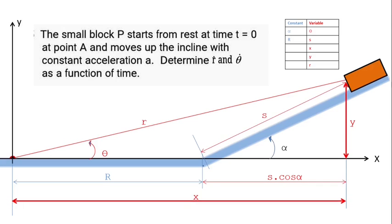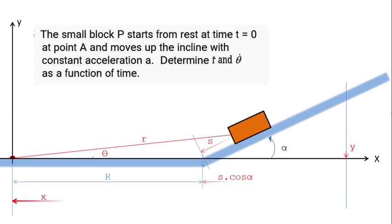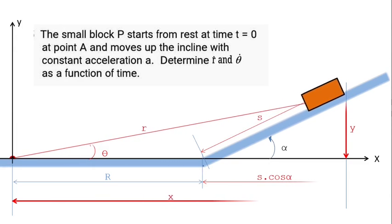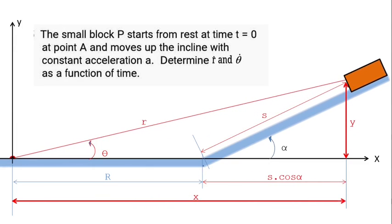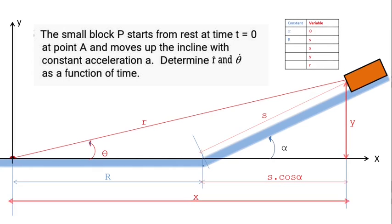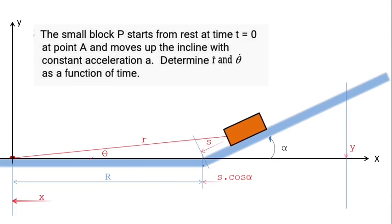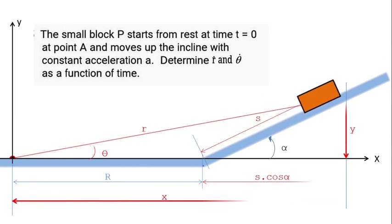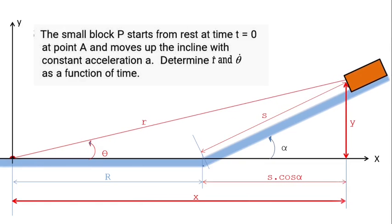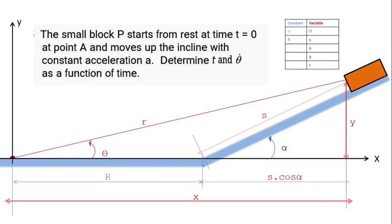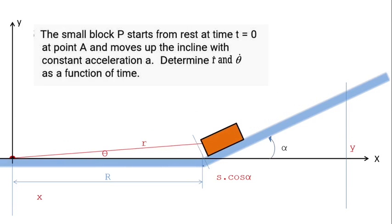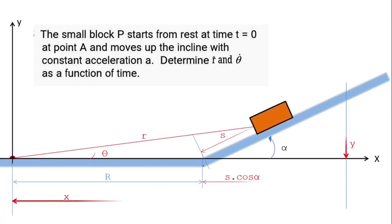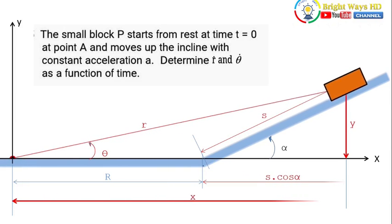As the particle travels starting from point A, it will have its own parameters. We have to identify the constant and variable parameters. The uppercase R and angle alpha are constant and do not change with respect to time, but the other parameters — theta, r, and s — are variables as functions of time.